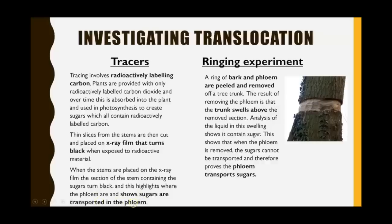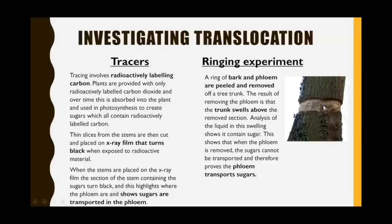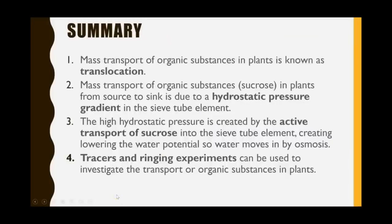Another way to investigate translocation is ringing experiments. A complete ring of bark and phloem is removed from a tree. Over time the area just above the ring starts to swell because all the phloem has been removed, so the sugary solution cannot be transported any further down. To confirm it is a sugary solution, samples of the liquid are taken and tested for sugar. This proves it is the phloem that transports sugars, because when the ring of phloem is removed, sugars are no longer transported any further down.